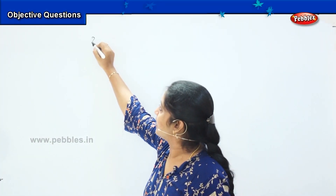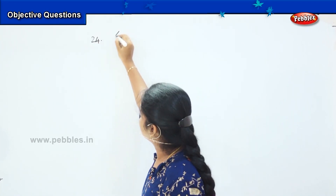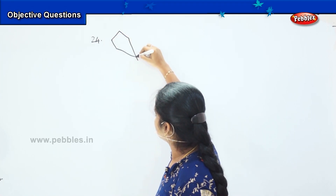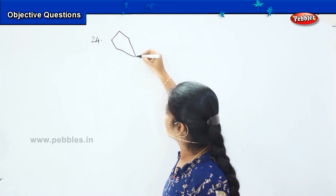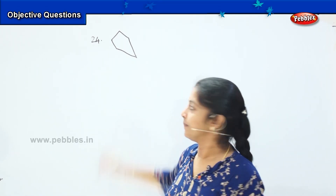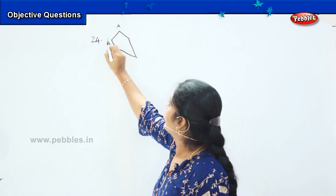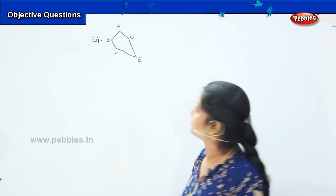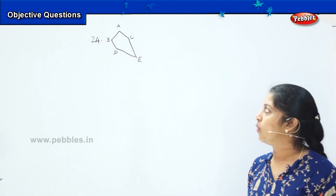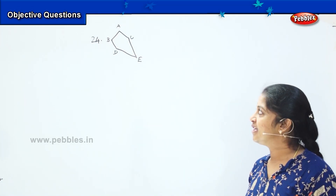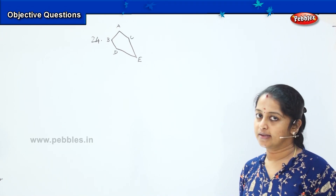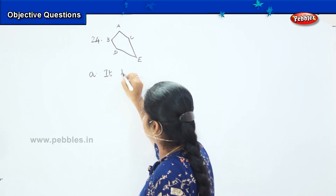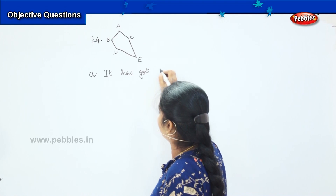Let's go to question number 24. Here is an uneven picture. We will name it as A, B, C, D and E. I am going to give you the options and you need to tell me which of the options are correct. Your first option is it has got five sides.